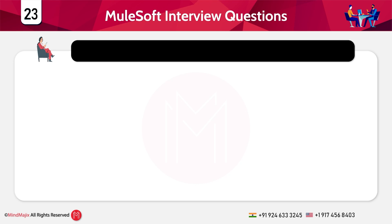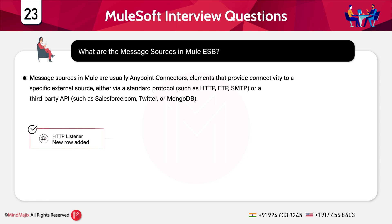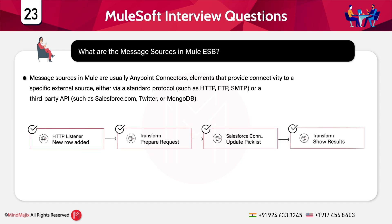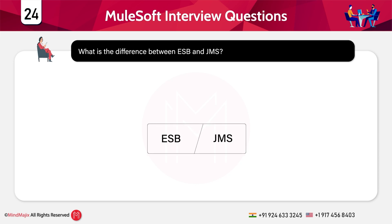What are the message sources in Mule ESB? Message sources in Mule ESB are usually AnyPoint connectors — elements that provide connectivity to a specific external source. This can be done using a standard protocol such as HTTP, FTP, or SMTP, or using a third-party API such as Salesforce, MongoDB, or Twitter.